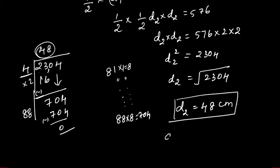You got your d2 value. How will you find d1 value? They said it's half of the other diagonal, so 1 by 2 of 48 is 24. The d1 value is 24 centimeter.